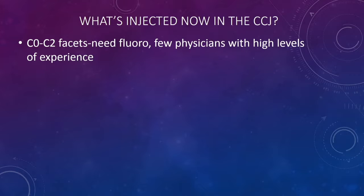The upper cervical facets can be injected — usually corticosteroids, which obviously hurt the joint, or more recently some PRP. The big issue with injecting these facet joints is that there are really few physicians with high levels of experience here. My partner John Schultz and I have done about 1,000 at each level each, which would make us the most prolific upper cervical injectors in the US. A physician with high experience at C0-C1 may have only injected 100.